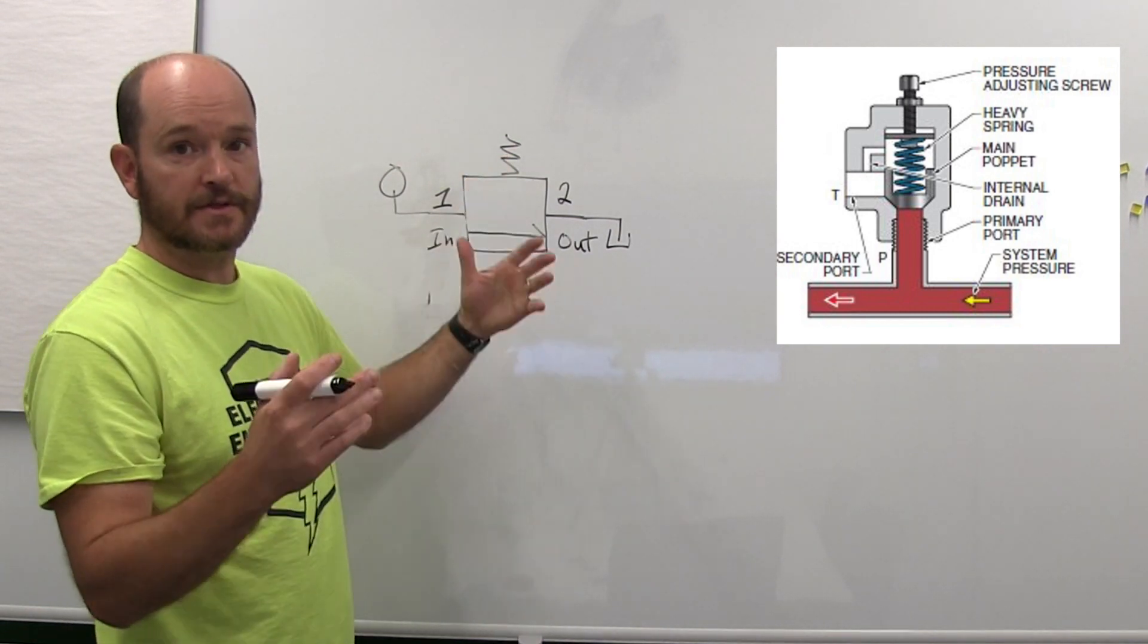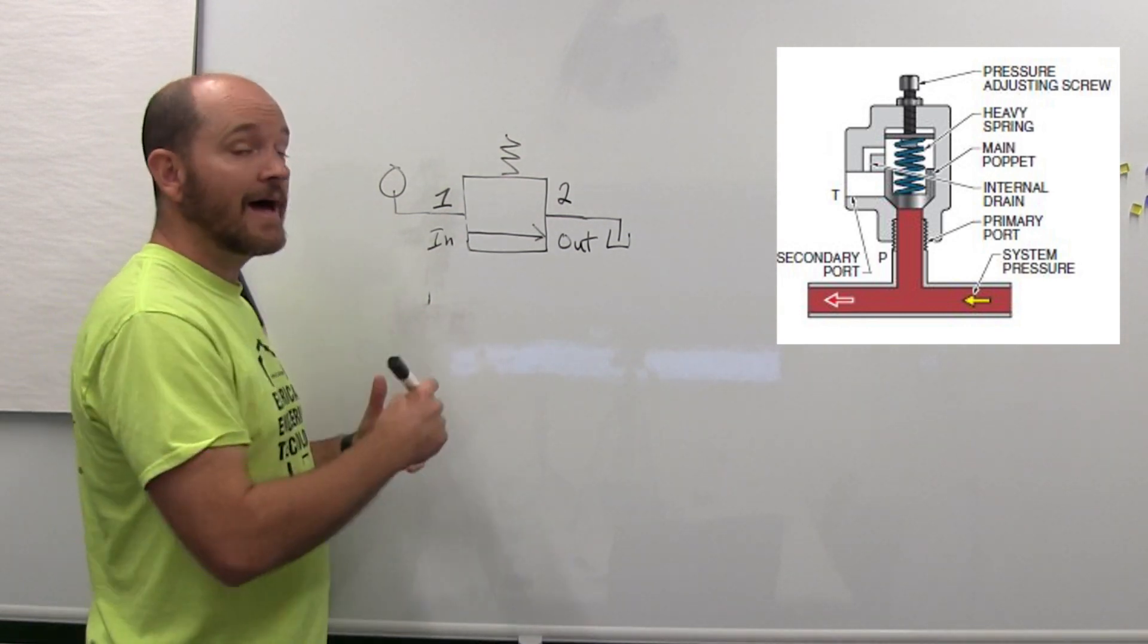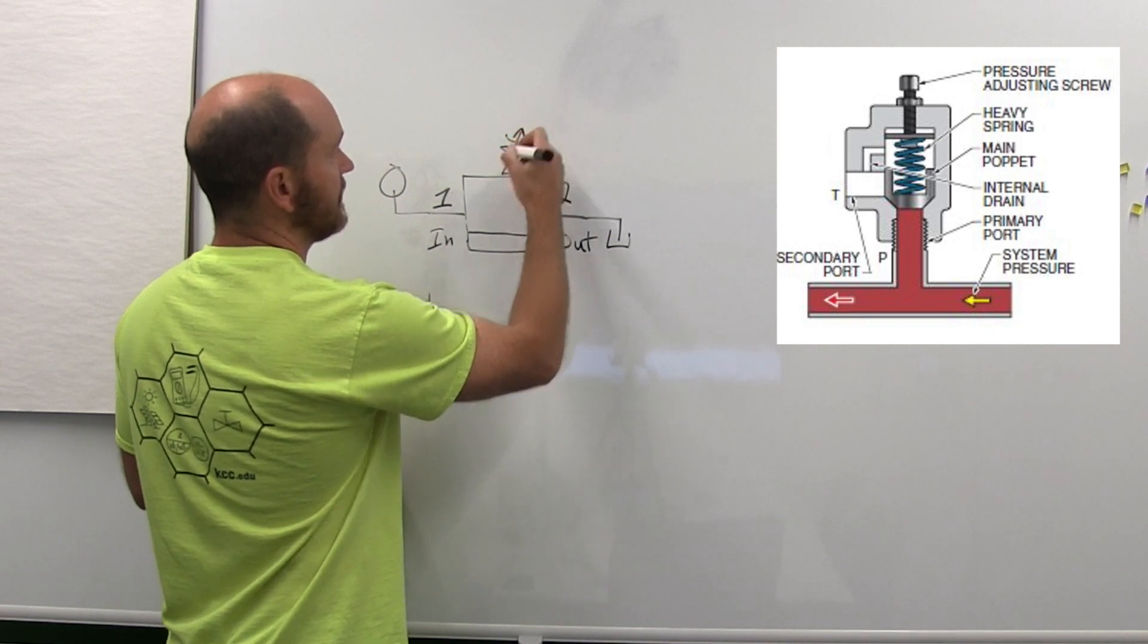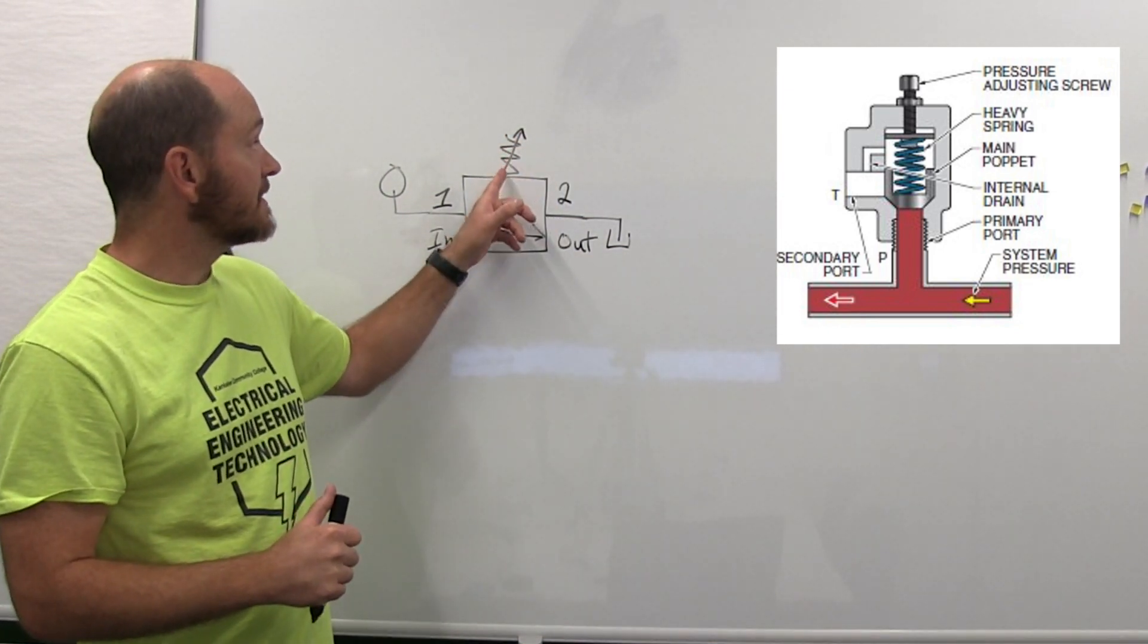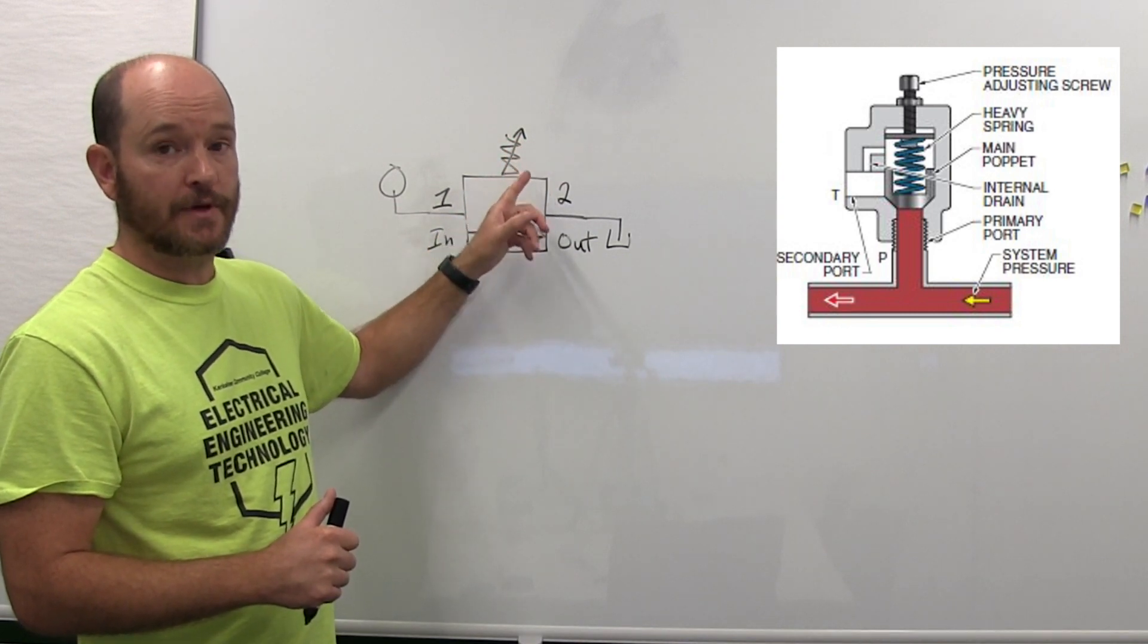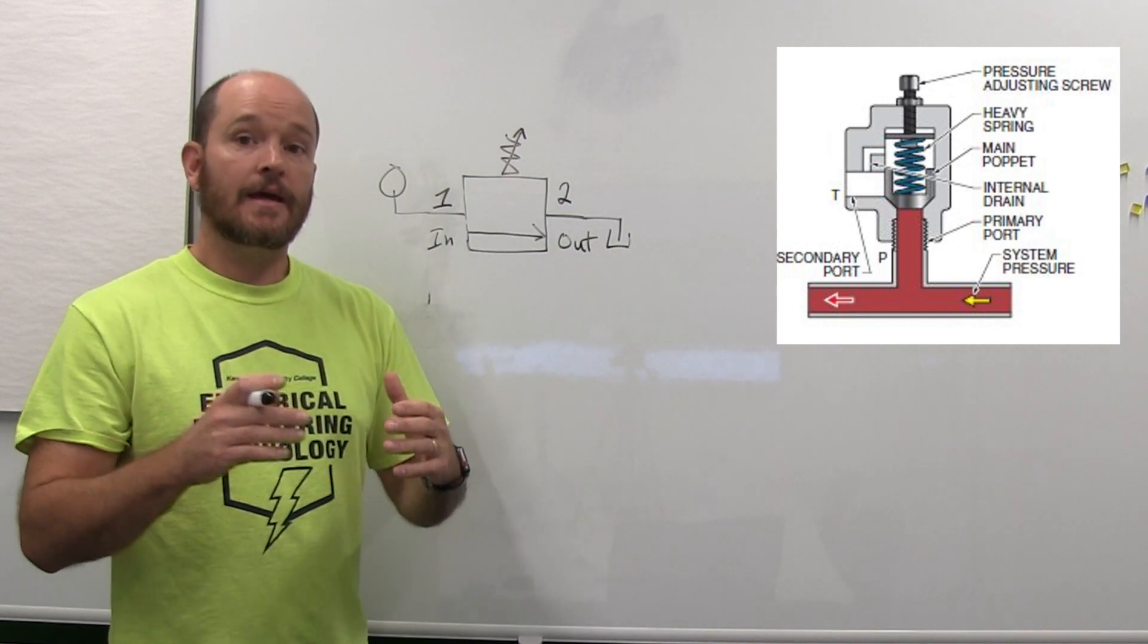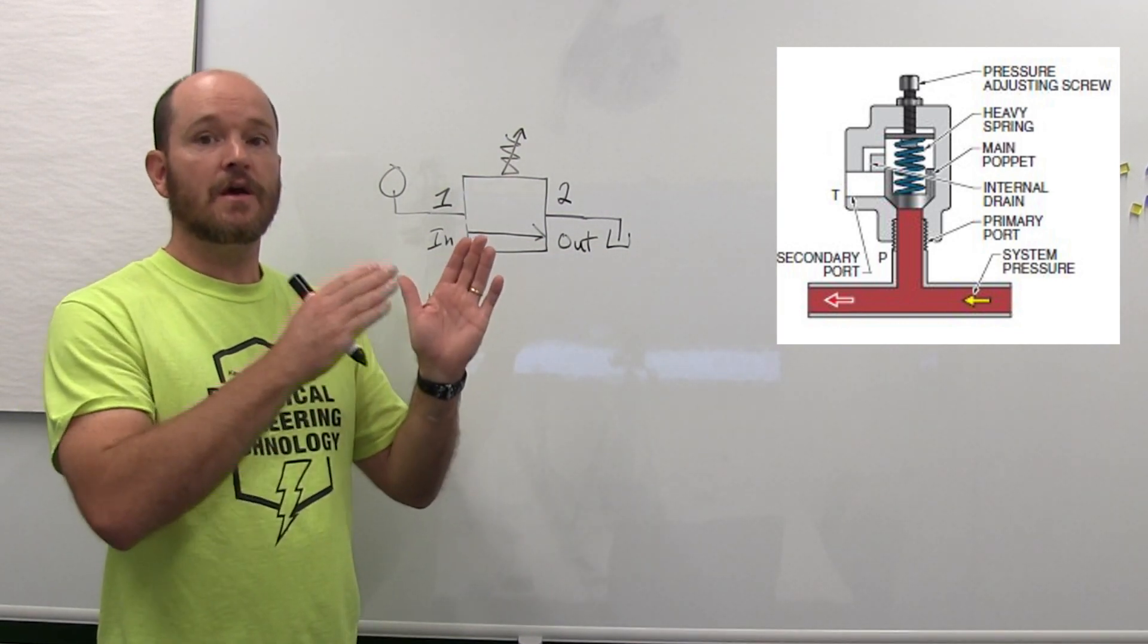A lot of pressure relief valves have the ability to be adjusted, and when that is the case there is an arrow that goes through the spring. Anytime there's an arrow going to or through something in a hydraulic system, that means it is variable—it can adjust through a specific range of pressures.